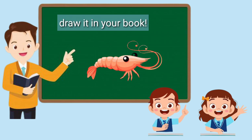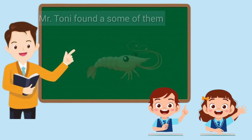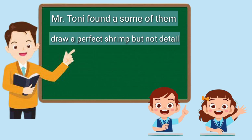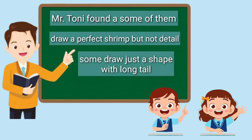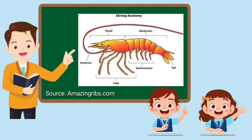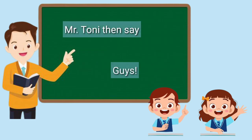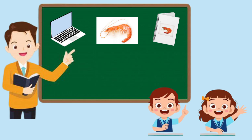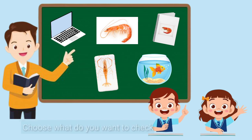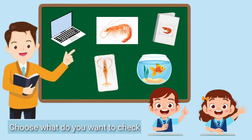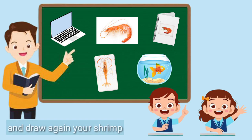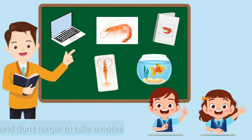After 10 minutes, Mr. Tony checked the students' work and found some of them drew a perfect shrimp but without detail, and some drew just a shape with a long tail. Mr. Tony then said, 'Guys, I have some videos, photos, cards, books, and specimens of shrimp, and there are two shrimp in that aquarium. Choose what you want to check, find what you want to know, draw your shrimp again, and don't forget to take notes. At the end, we will share our findings.'